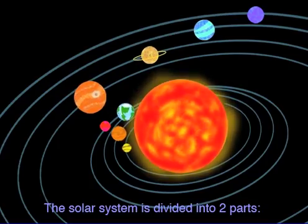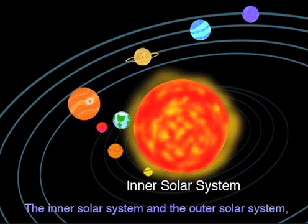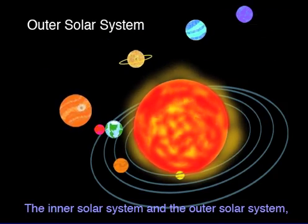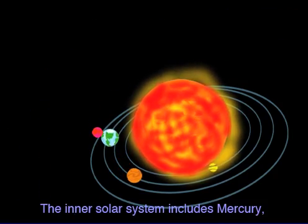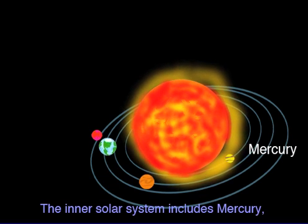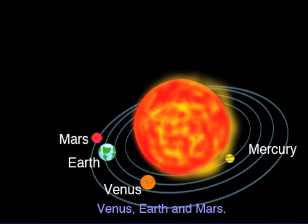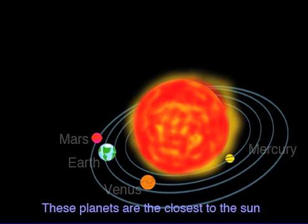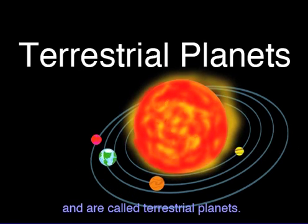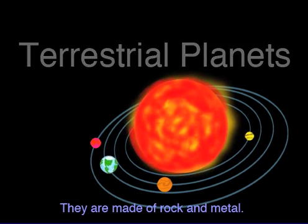The solar system is divided into two parts: the inner solar system and the outer solar system. The inner solar system includes Mercury, Venus, Earth, and Mars. These planets are the closest to the sun and are called terrestrial planets. They are made of rock and metal.